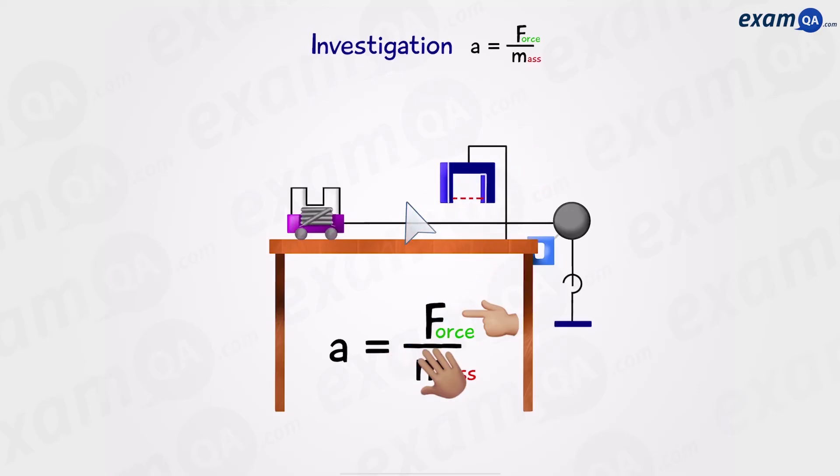Then we're going to reset the experiment, but this time we're going to transfer one mass from the trolley onto the hanging masses. Now the mass of the system is still going to be 5, 4 plus 1. However, the force has now increased to 1. And again, we're going to run the experiment and record acceleration.